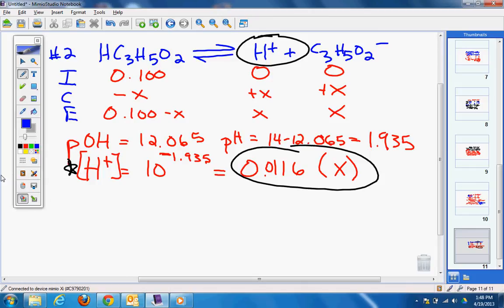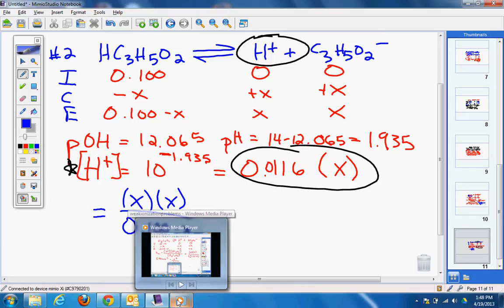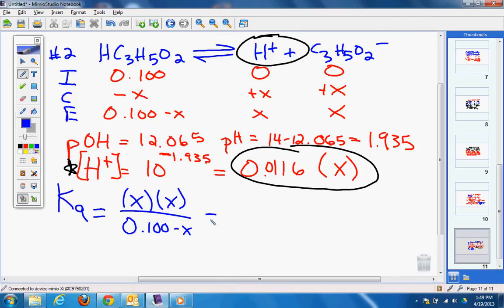Again, you get one point for always writing the equilibrium expression, which would be the concentration of the products over the reactant. I'm going to have it equaling X times X over 0.10 minus X. I know what X is and I'm solving for Ka. I don't know what Ka is. So I plug in my X values: 0.0116 squared divided by 0.100 minus 0.0116.